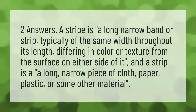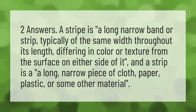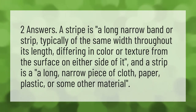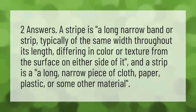Two answers. A stripe is a long narrow band or strip, typically of the same width throughout its length, differing in color or texture from the surface on either side of it. And a strip is a long narrow piece of cloth, paper, plastic, or some other material.